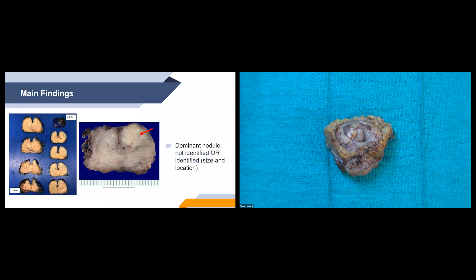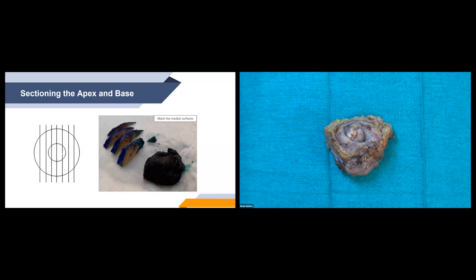Once all slices are laid out, we assess the prostate parenchyma for any dominant nodules. The image on the right with the red arrow shows a nice dominant nodule, which we would document with its size and location. For the apex and base, we do perpendicular sections: imagining looking down over the top, the central circle is the urethra. Our first cut goes right through the center of the urethra, then we continue cuts from right to left making mirrored images. We mark the medial sides of the tissue so those sides are embedded down in the cassettes for the pathologist to examine.